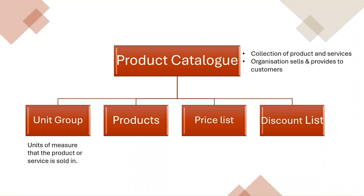Let's start with unit groups. It defines the units of measure that the products or services are sold in. For example, fruits can either be sold in kilograms or pounds, or they can be sold individually. Moving to products — a product represents the type of product that a company might keep in inventory or services provided to customers. Let's consider an example of an electronics store having various products in stock, including laptops and accessories.